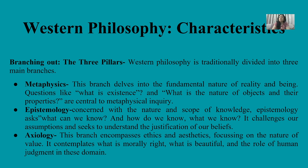Then Epistemology — it deals with the nature and scope of knowledge. It tells us: What can we know? How do we know? And what do we know? It challenges our assumptions and seeks to understand the justification of our beliefs. And Axiology tells us about Ethics and Aesthetics — divided into moral philosophy and the study of beauty. It focuses on the nature of value: what is morally right, what is beautiful, and what role human judgment plays in these domains. So the second characteristic is that Western Philosophy is divided into three main branches.